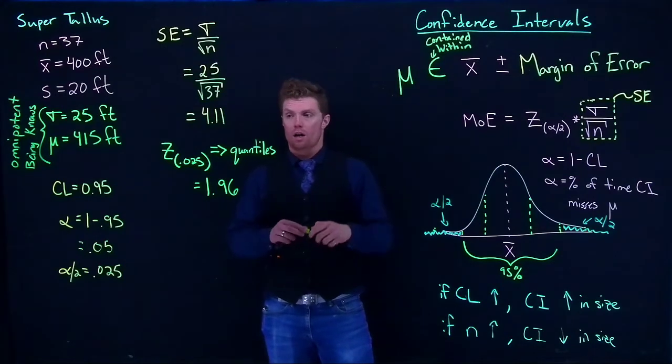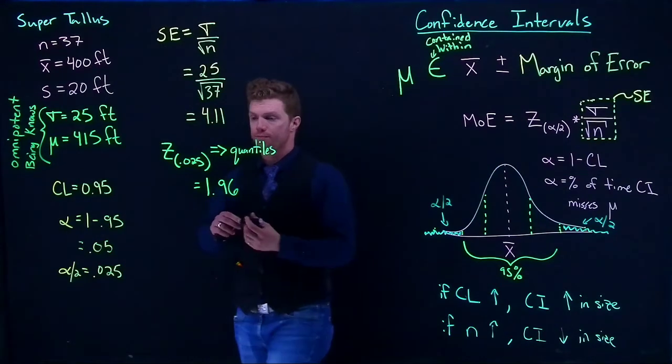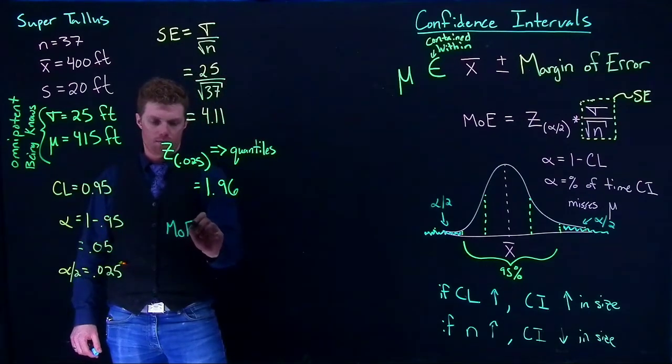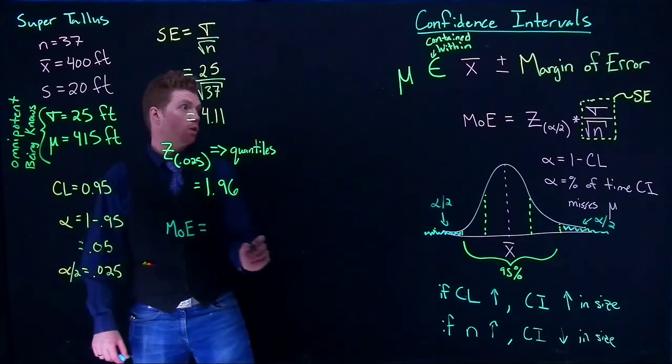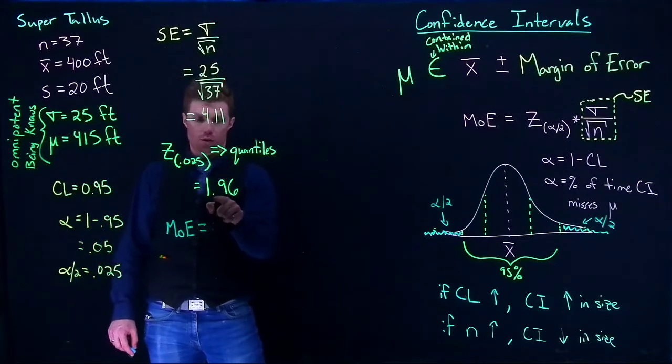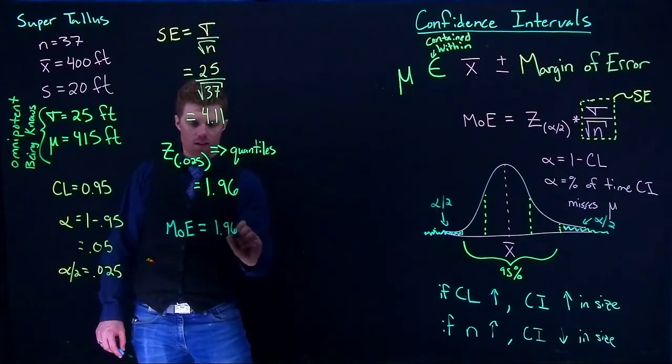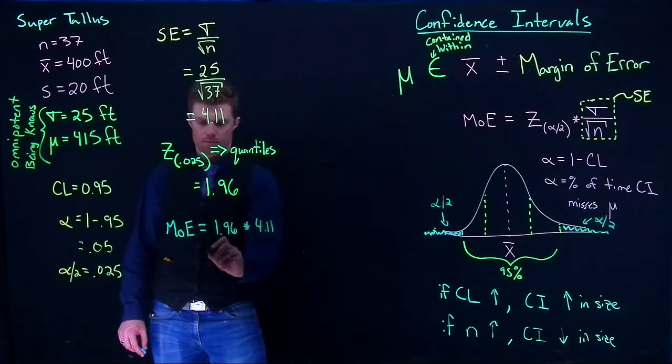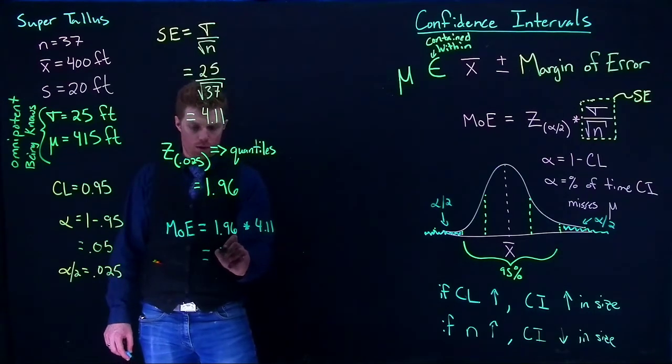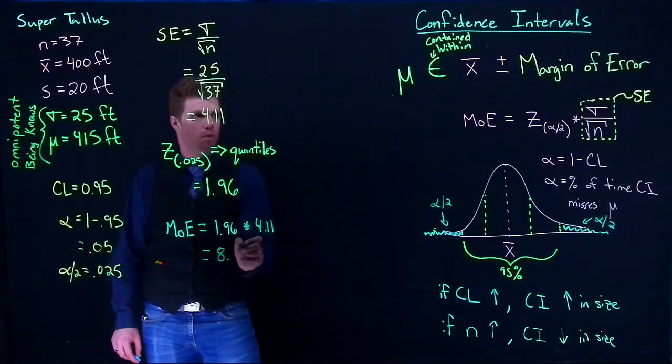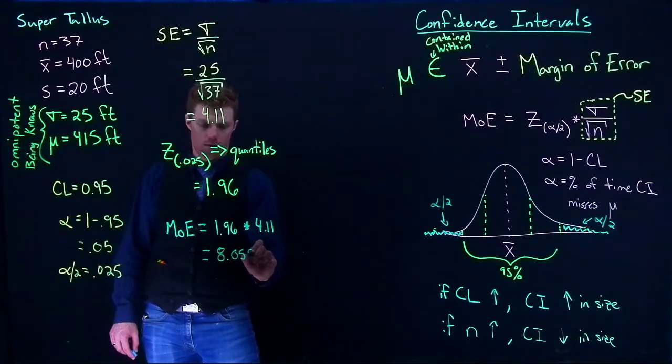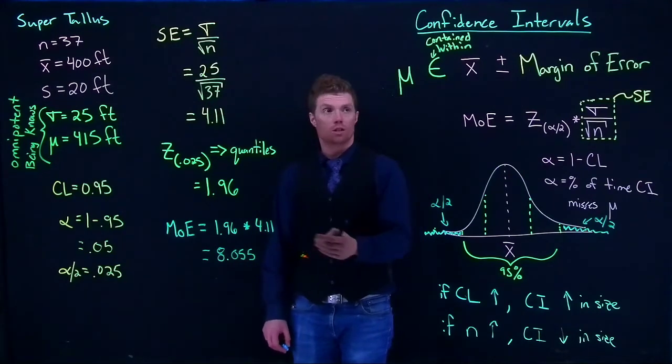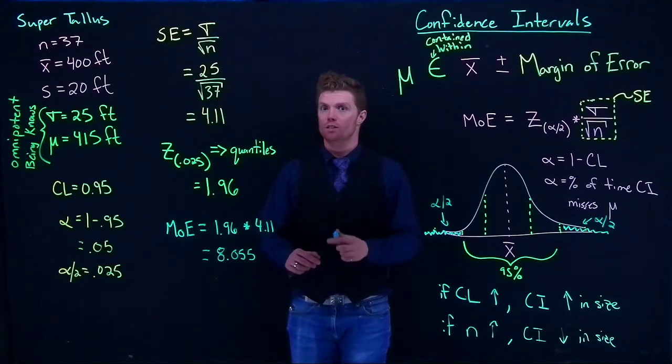Or it's basically back to our empirical rules. Two standard deviations away from the mean gives us 95% of the area under the curve. Okay so now we just need to get our margin of error in there. And we can say our margin of error. That guy is just going to be equal to z alpha divided by 2 which equals 1.96 multiplied by 4.11. And that is going to equal 8.055. Okay fantastic. So now that we have our margin of error we can say where we think that the true mean is located.